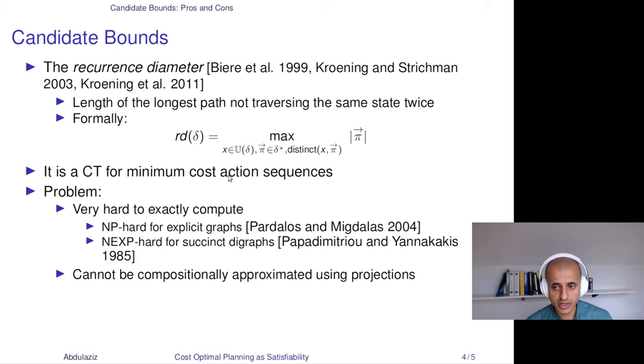It is, indeed, a CT for minimum cost action sequences. For the proof of that, check the paper. But there are a few problems with it. The first one is that it's very hard to compute. It is NP-hard for explicitly-represented directed graphs, and it is nondeterministically exponentially hard for succinctly-represented directed graphs. It also cannot be compositionally approximated using projections of the given transition system, which is a very big problem. This means that it cannot be practically bounded for any system unless you already extend computation resources that are much bigger than computing an optimal plan in the first place.